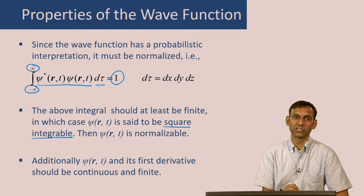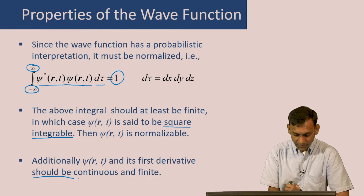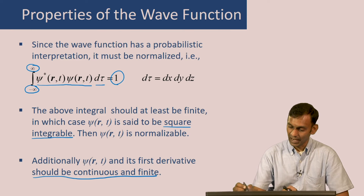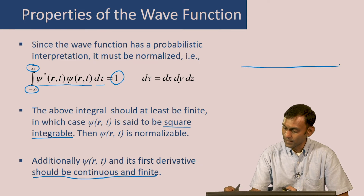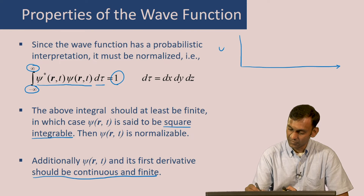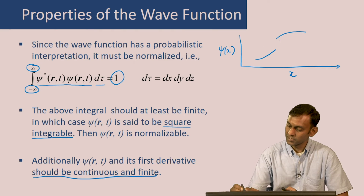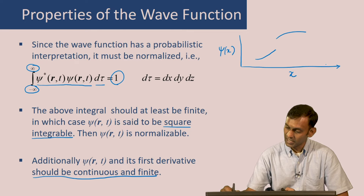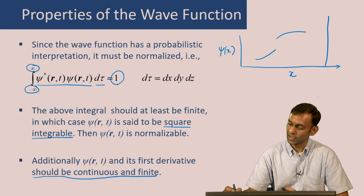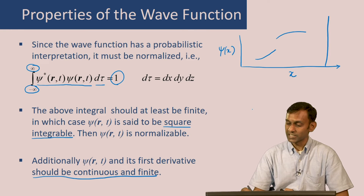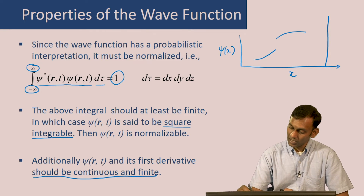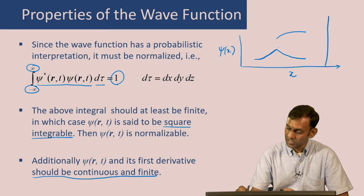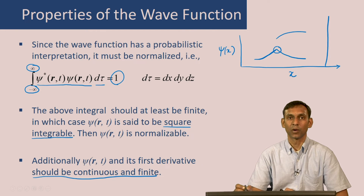Additionally, the wave function must be continuous and finite. Continuous means there can be no sudden jumps in the wave function along the x axis. Finite means the wave function cannot go to infinity at any point. Moreover, its first derivative must also be continuous — you cannot have a wave function that has a kink where the first derivative is discontinuous at that point. These are some important properties that the wave function needs to satisfy.